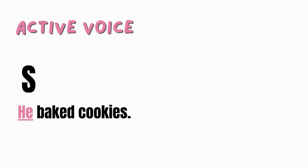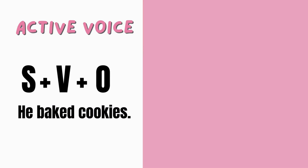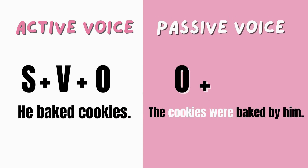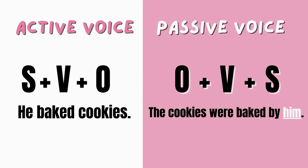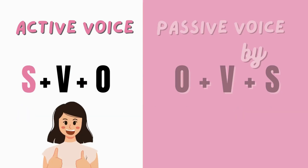In active voice, the subject of the sentence comes first, followed by the action and then the object. While in passive voice, the object and the action come first, while the subject is added at the end and is usually introduced by the preposition 'by.' Again, in active voice, the subject always comes first.